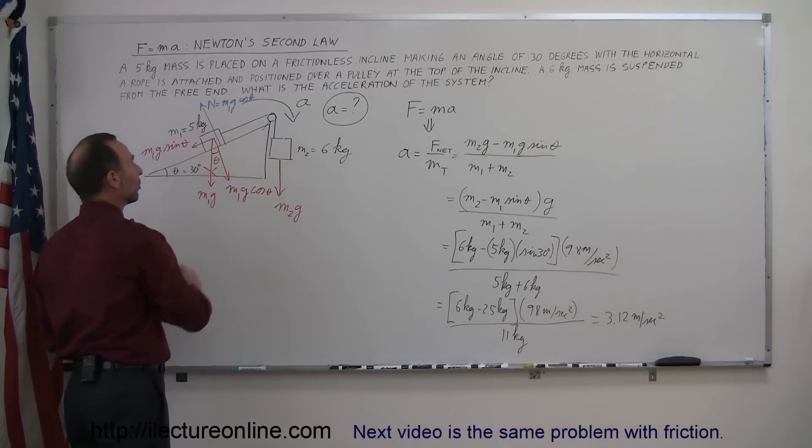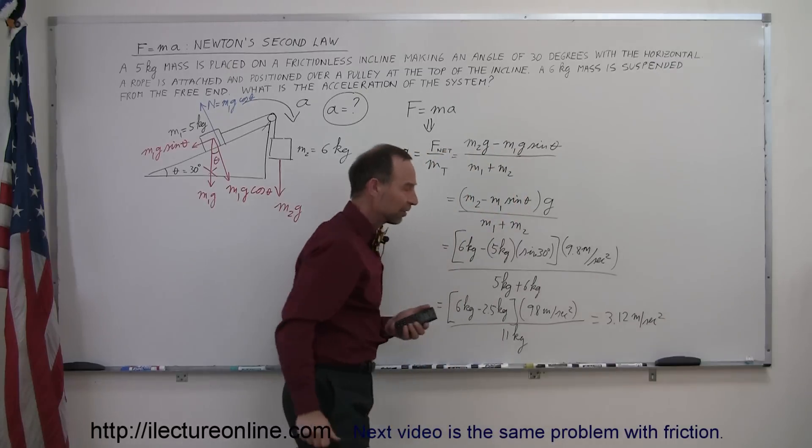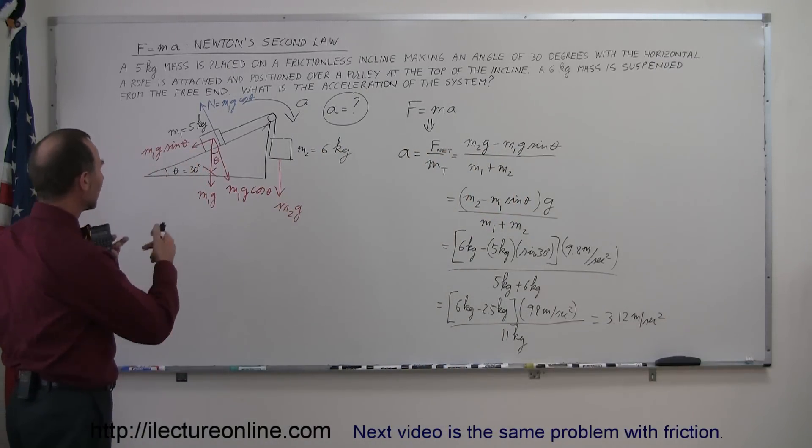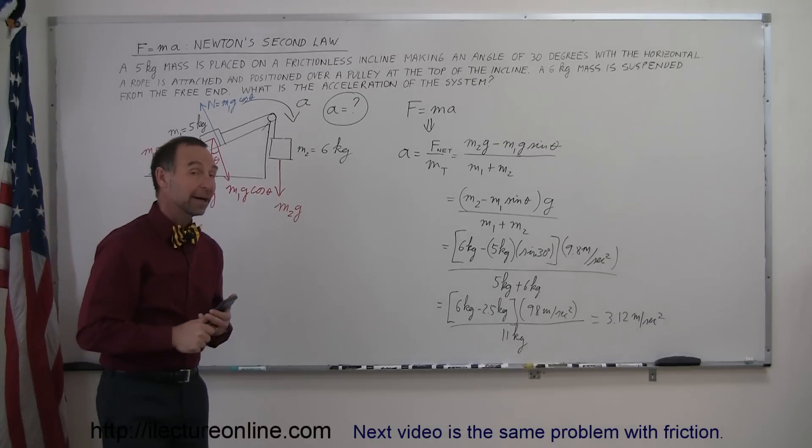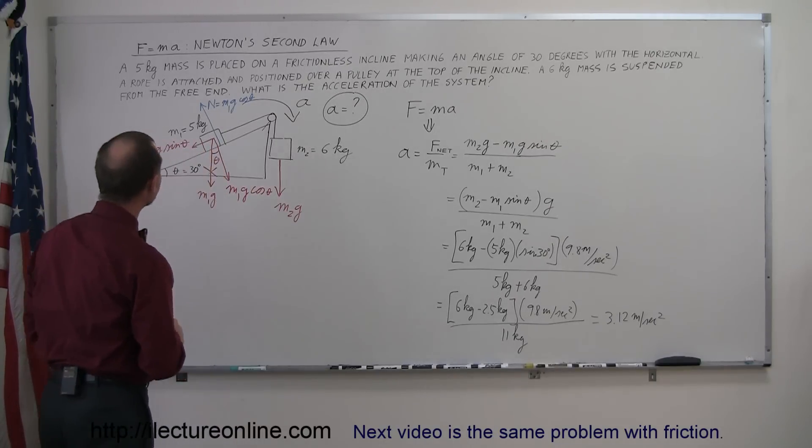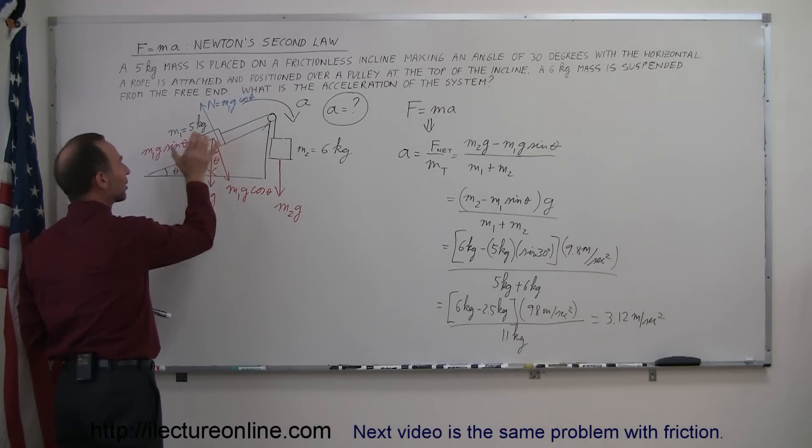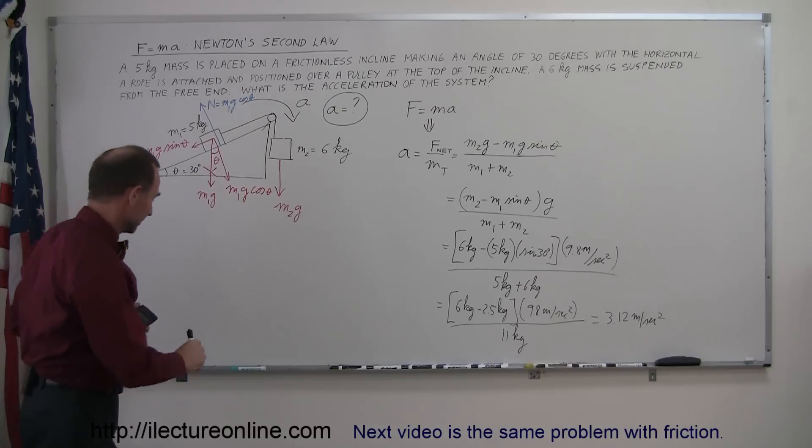Since I only gave you the numbers to one significant figure, we should round this off to one significant figure, so we should say 3 meters per second squared, although normally we get the numbers to more significant figures. I just wanted to take it easy here and just use one significant figure on the problem. The next one we're going to do is the same problem, but now we're going to have friction on the incline to see how that changes the problem.